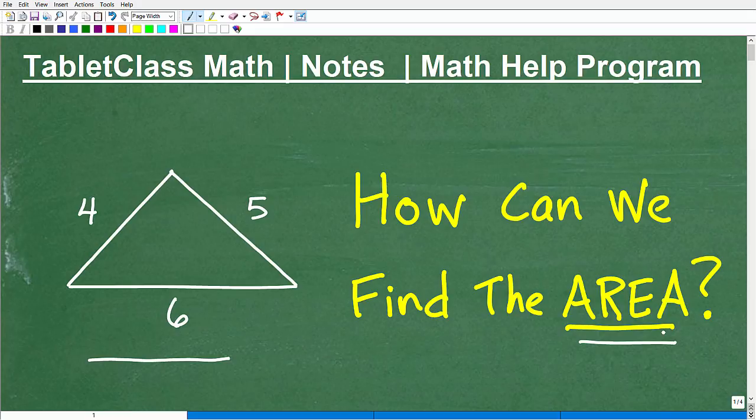You're like, oh yeah, that's easy. I found the area of triangles before. And you're probably thinking to yourself, I need that formula: area equals one-half base times height. And that's pretty good thinking.